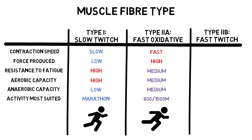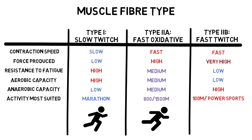Type 2b fibres are all about power. They are quick to fatigue but produce quick and powerful movements, making them perfect for power-based activities such as the 100 metre sprint.